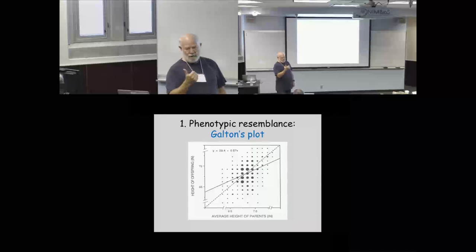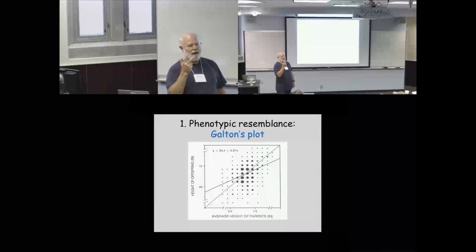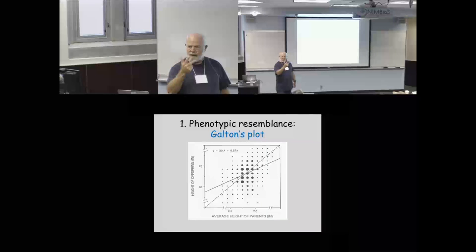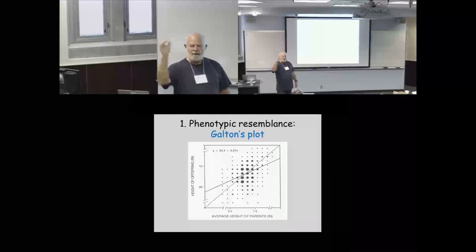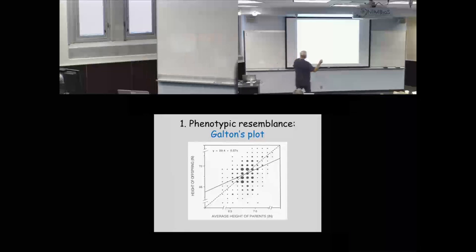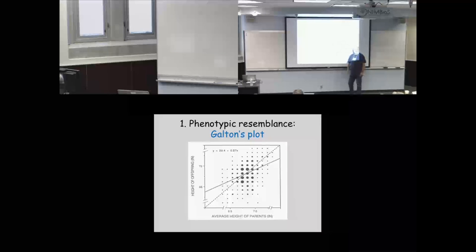Fisher, Weinberg, and Wright independently asked: what are the Mendelian roots for this phenomenon? In all three independent derivations — separated by World War I, in the US, Germany, and England — three scientists independently derived basically the same algebra. What comes out of all three is the simple point that the key feature responsible for the regression line is additive genetic variance.